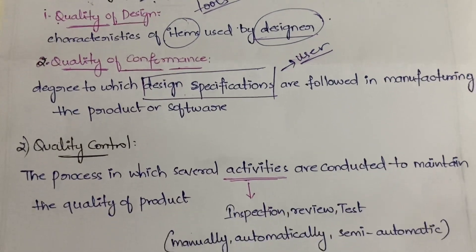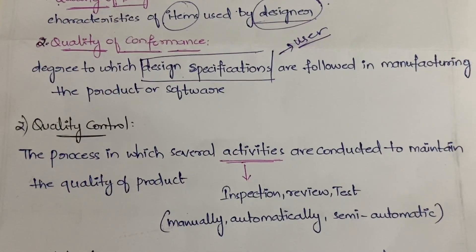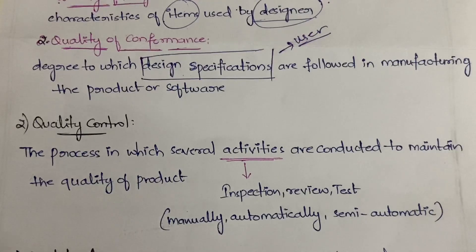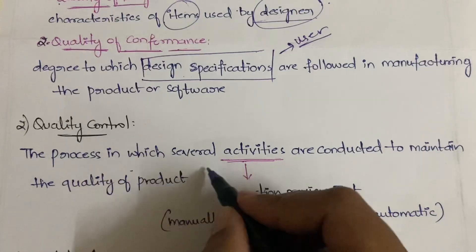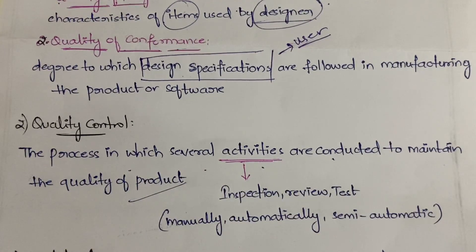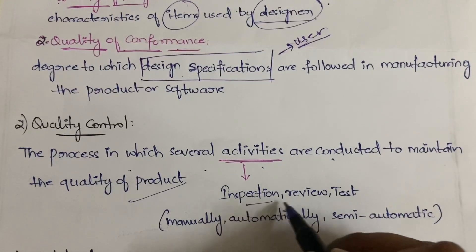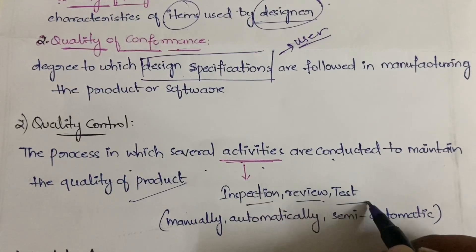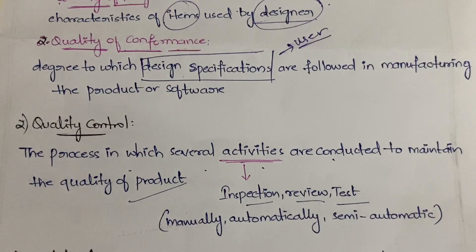The second quality concept is quality control. Quality control is a process in which several activities are conducted to maintain the quality of the product. These activities could be inspections, reviews, or tests. Inspection means going and testing the software during manufacturing itself.